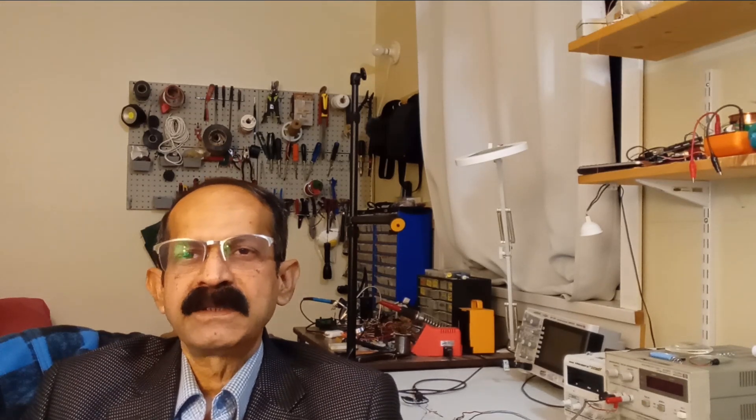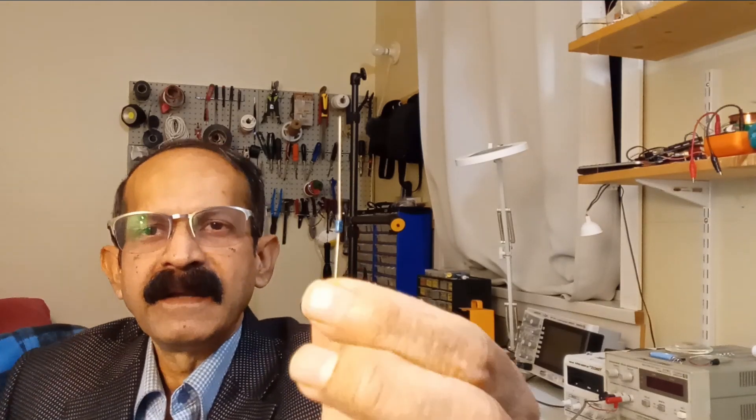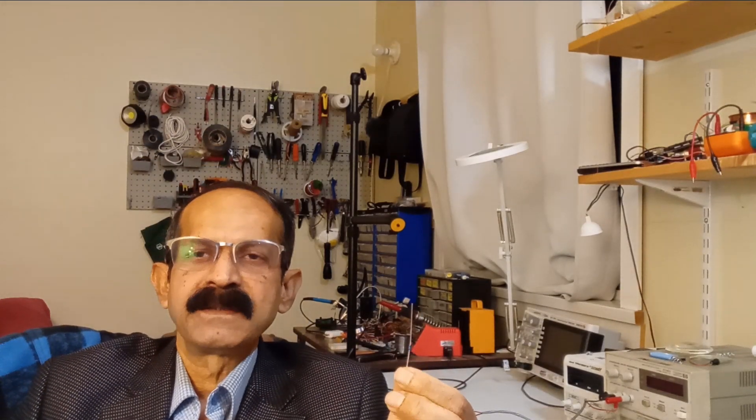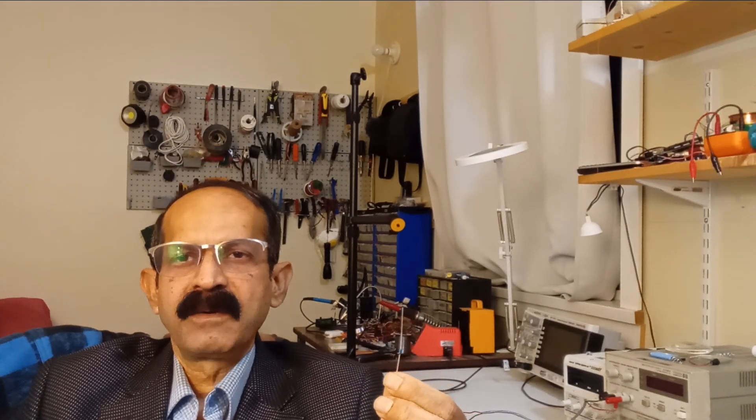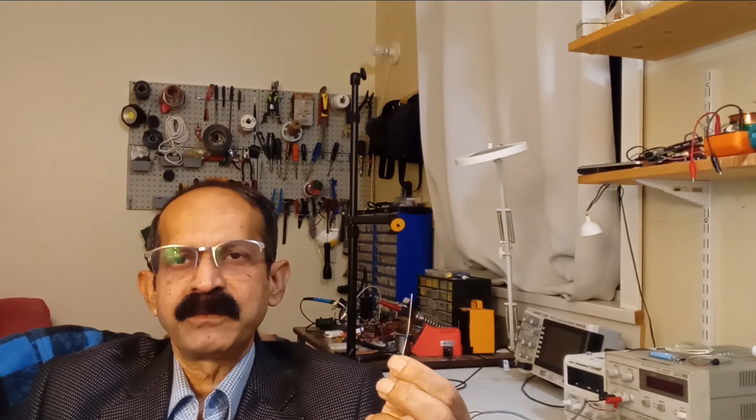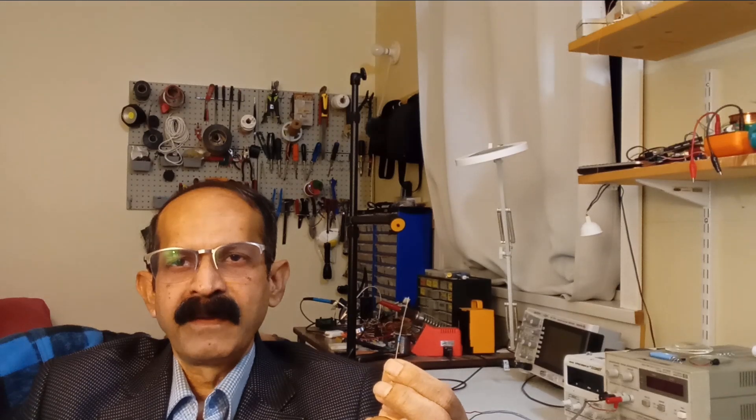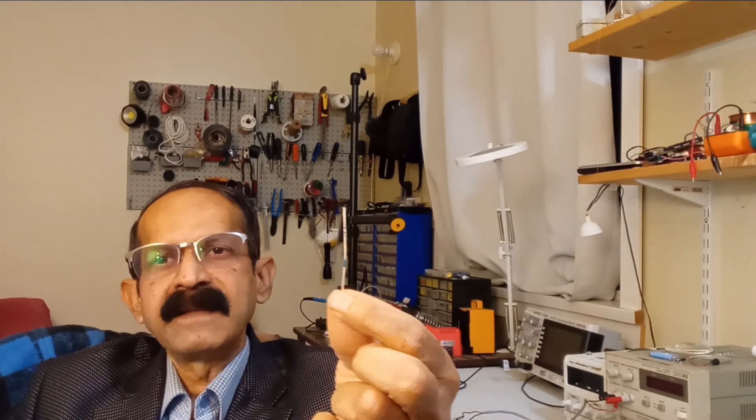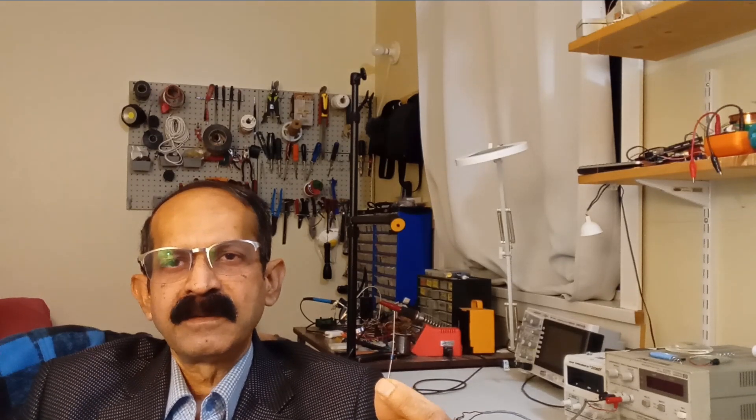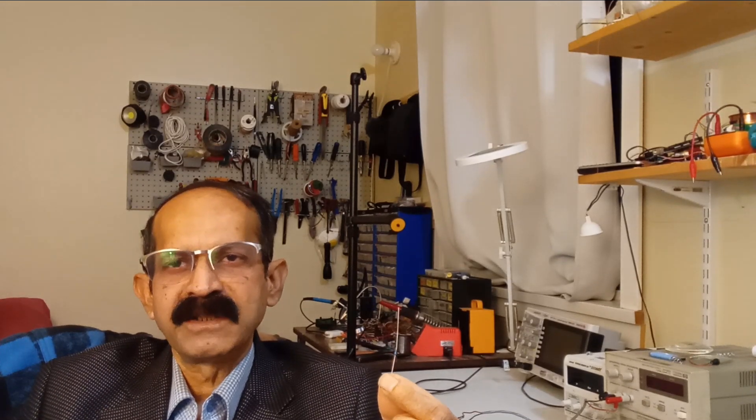The main component which I am going to use is called a DIAC. And here it is. It's a very small semiconductor device, mainly used for switching other high power devices called thyristor. But here I am using this as a part of an oscillator circuit. So this DIAC and one capacitor and two resistors form the audio oscillator or more commonly known as the tone generator.